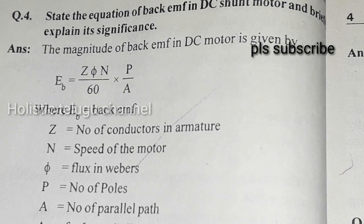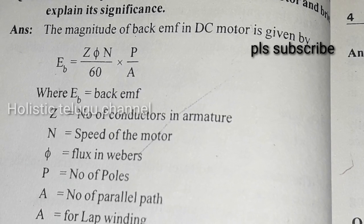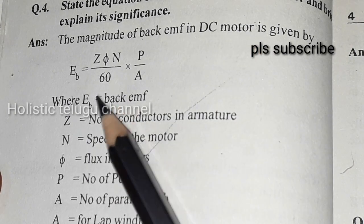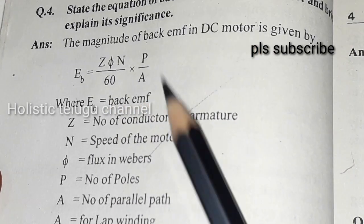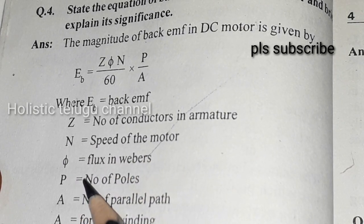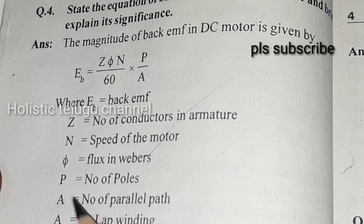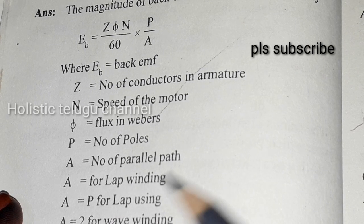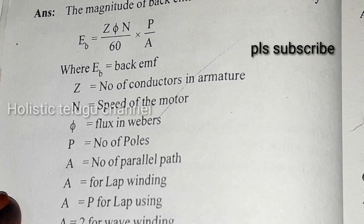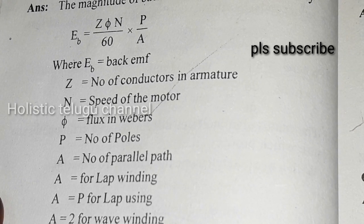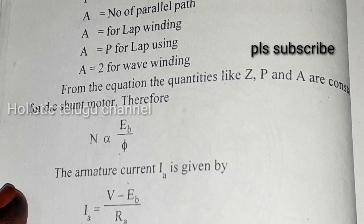Next question: state the equation of back EMF in a DC motor and briefly explain its significance. The magnitude of back EMF is given by: EB equals Z times phi times N divided by 60, multiplied by P divided by A, where EB is back EMF, Z is number of armature conductors, N is speed of motor, phi is flux in webers, P is number of poles, and A is number of parallel paths. For lap winding A equals P, and for wave winding A equals 2. Since Z, P, and A are constants for a DC motor, N is proportional to EB divided by phi.